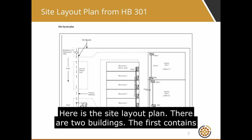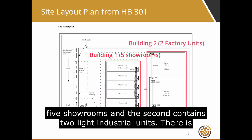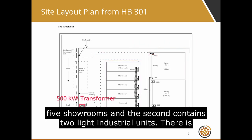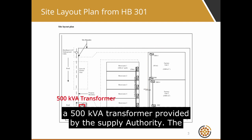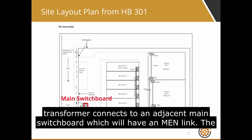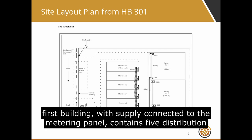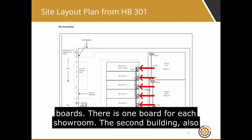Here is the site layout plan. There are two buildings. The first contains five showrooms and the second contains two light industrial units. There is a 500 kVA transformer provided by the supply authority. The transformer connects to an adjacent main switchboard, which will have an MEN link. The first building, with supply connected to the metering panel, contains five distribution boards — one board for each showroom.